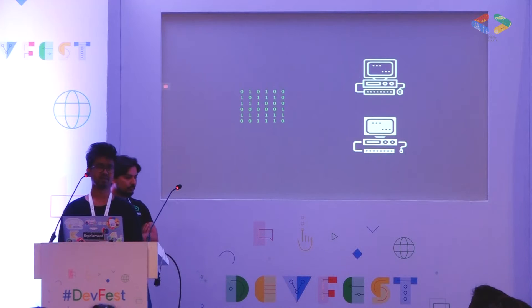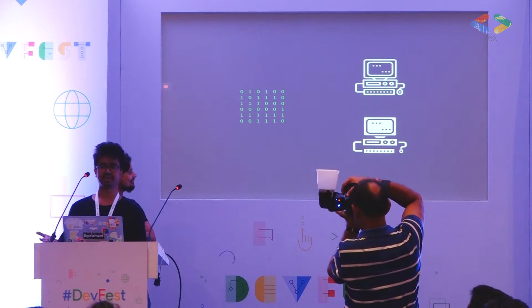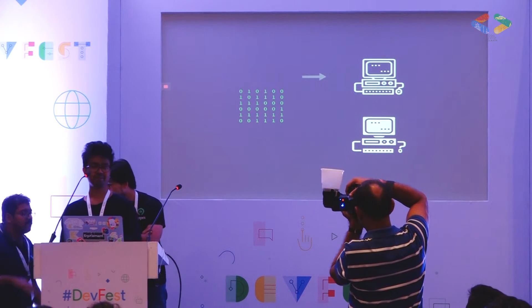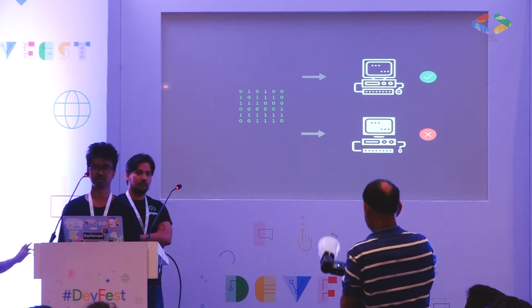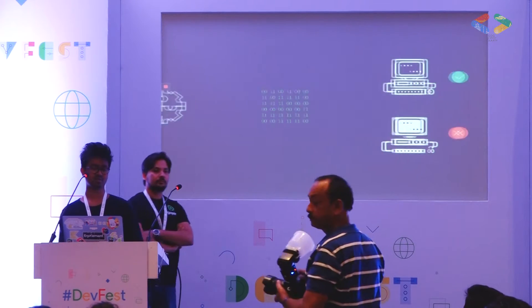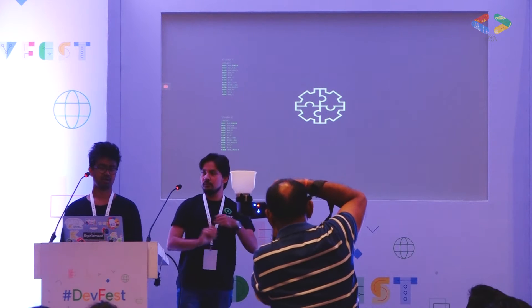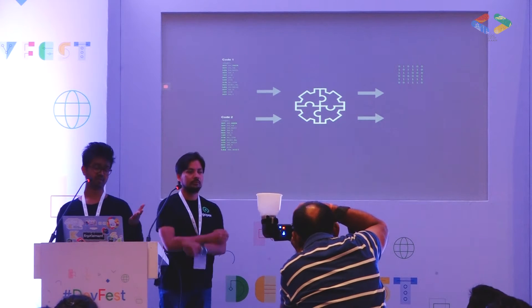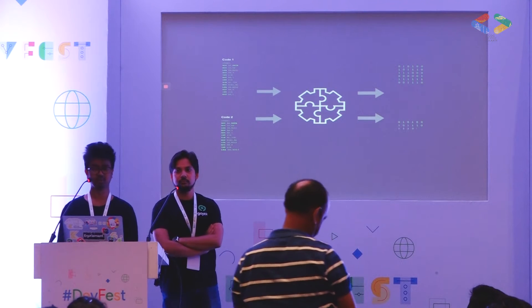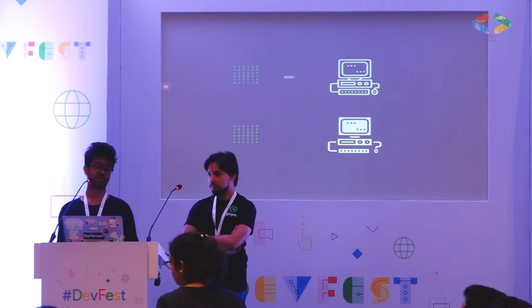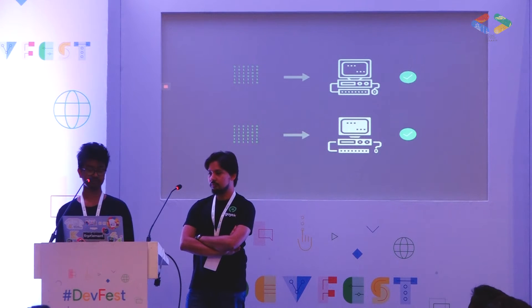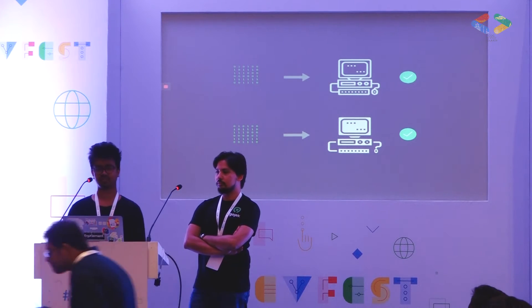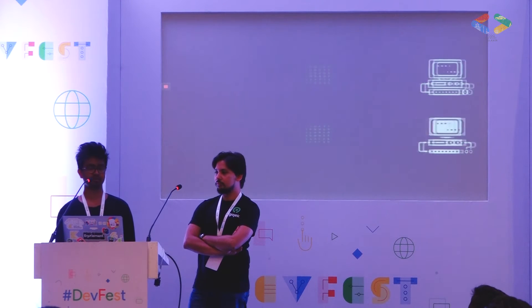Everything was working fine but we started inventing different kinds of computers with different architectures, and that became a problem. Programs written for a particular type of computer were no longer valid for a different kind. The solution was to write the same program multiple times, give your source code to an assembler, get machine-readable instructions, and give those to the appropriate machines. This worked but it's not a great solution — writing the same program multiple times is not a good use of your time. That's why we moved to C and C++.